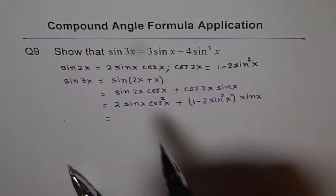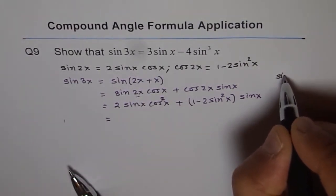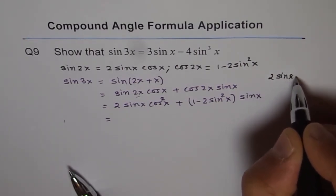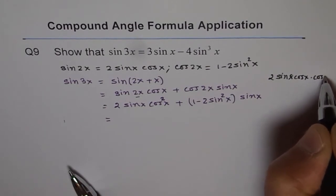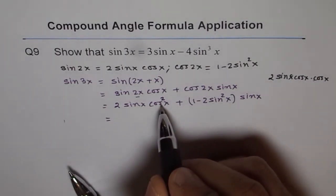Let me show what I did here for this term. So it is sine 2x is written as 2 sine x cos x times cos x, right? So cos x times cos x squared, so I squared it. Do you see that?